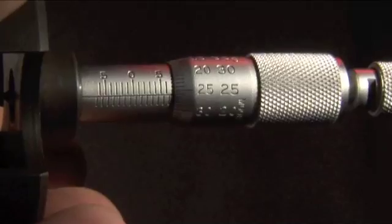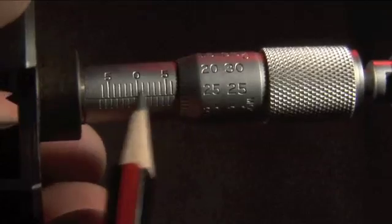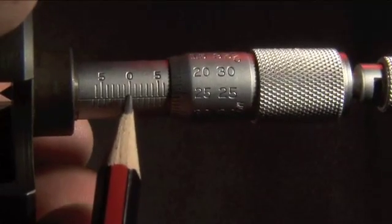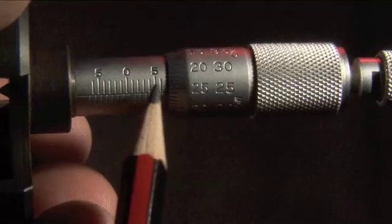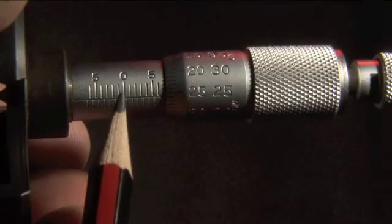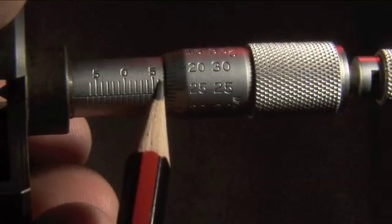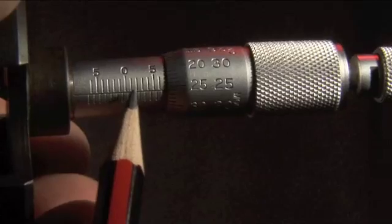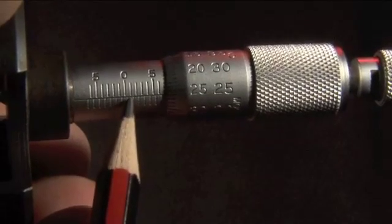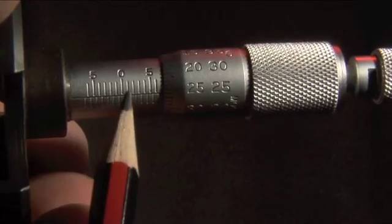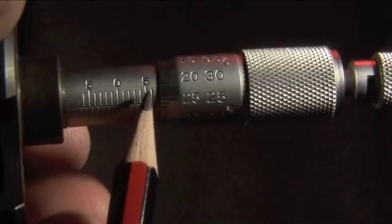The first thing I'd like you to notice is that there's a main scale here. There's a zero mark, and in this direction, which is the direction of increasing radius of curvature, you have marks at one millimetre apart. So you've got zero, one, two, three, four, five millimetres.